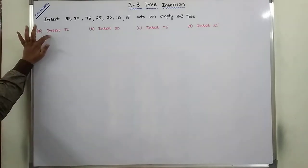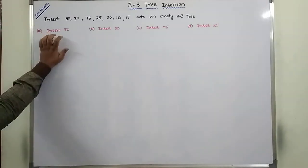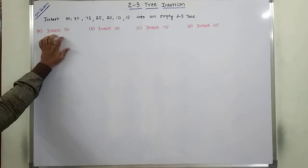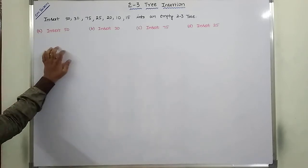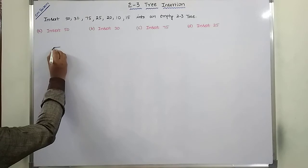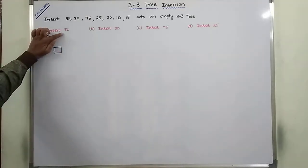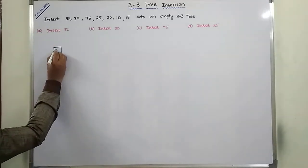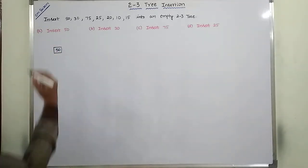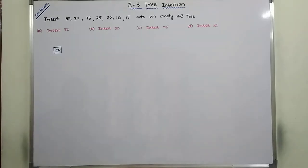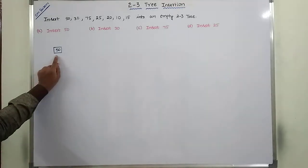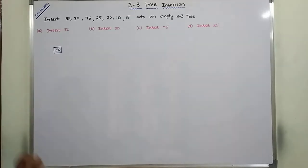Now first insert 50. Before inserting 50, the 2-3 tree is empty. Now create a node as a leaf node. I am inserting this key value into this leaf node, that is 50. After inserting element 50, the 2-3 tree contains a single element, that is 50.